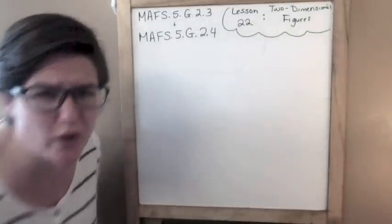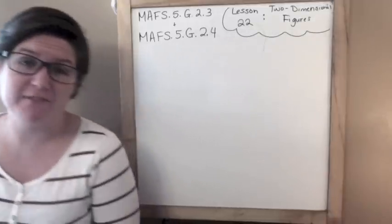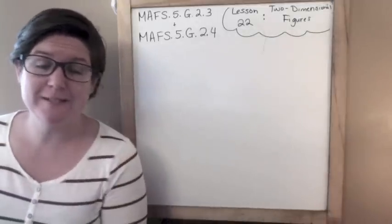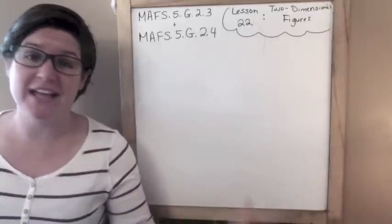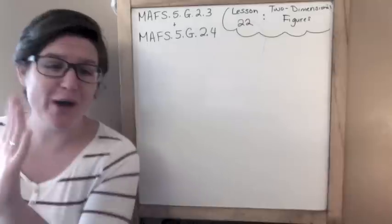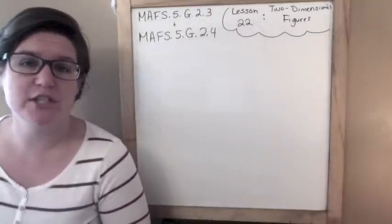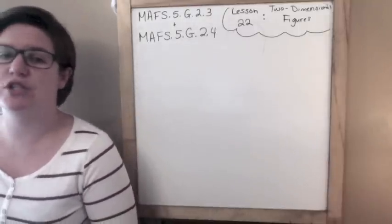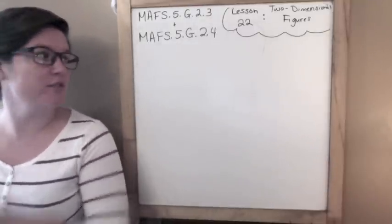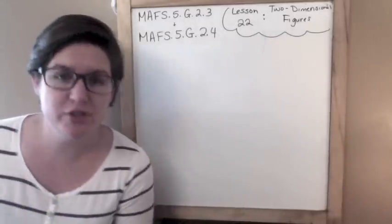Hello everybody, and welcome to another episode of How to Pass the Math FSA. This is the 5th grade edition, and this happens to be the last lesson, Lesson 22. Today we will be working on two standards: MAFS.5.G.2.3 and G.2.4. G stands for Geometry, and we are working on two-dimensional figures.